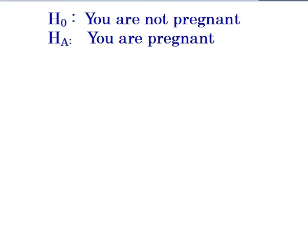Hey AP Stats, it's Mr. Lineski here today talking about the difference between a type 1 and a type 2 error. Before we get started, I want to remind you that a type 1 and type 2 error aren't things that you do wrong — it's something that the data does wrong. So it is okay to say that we got a type 1 error or a type 2 error. It's just something that the data kind of messes us up a little bit.